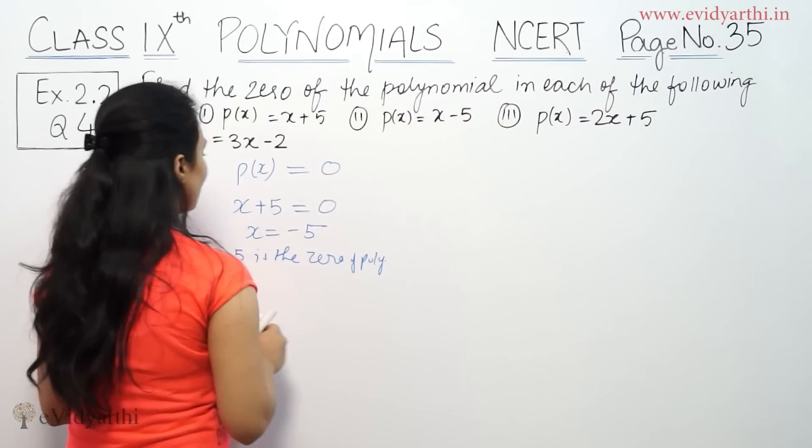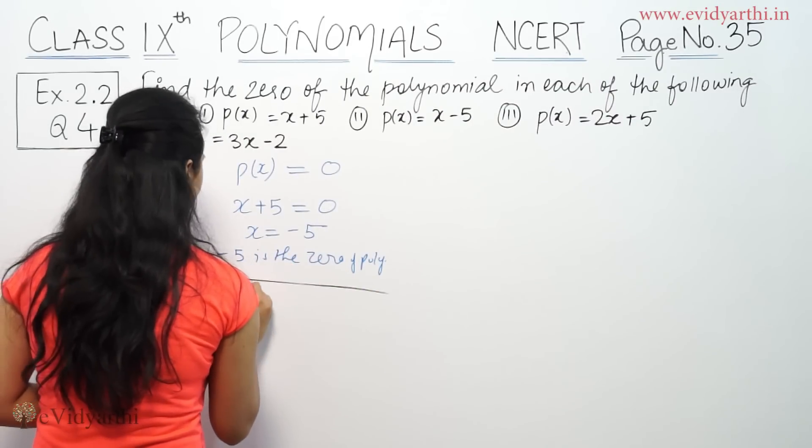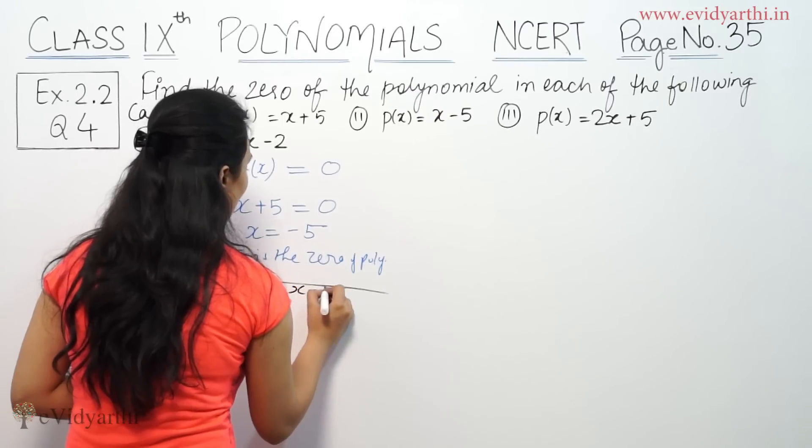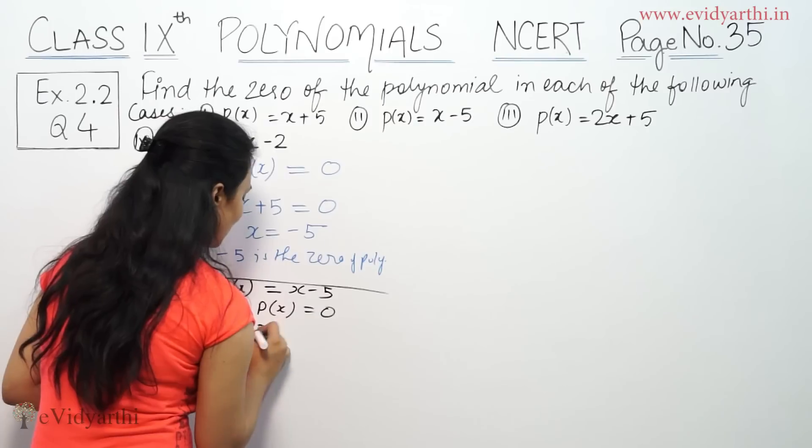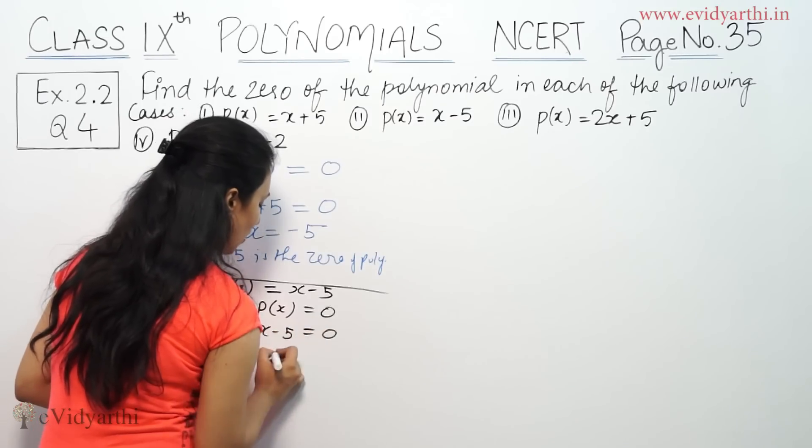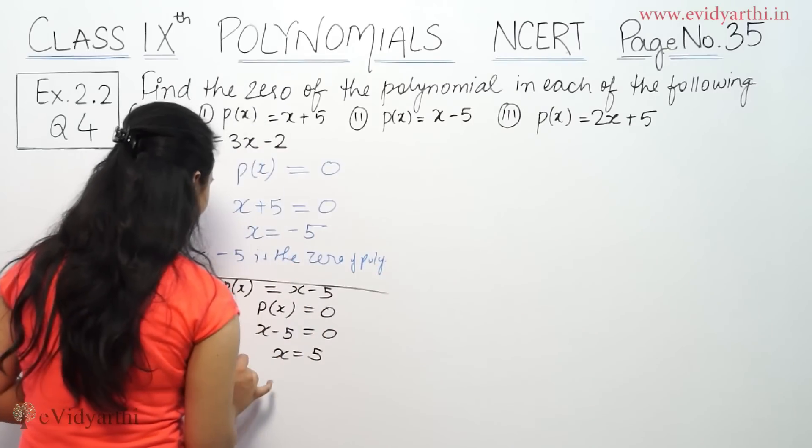Part number 2, which is p(x) equal to x minus 5. Now again, p(x) equal to zero, that means x minus 5 equal to zero, so x is equal to 5. That means 5 is the zero of the polynomial.